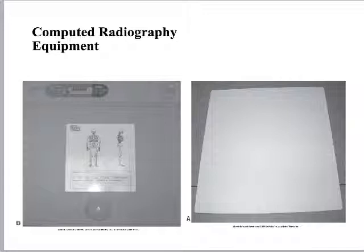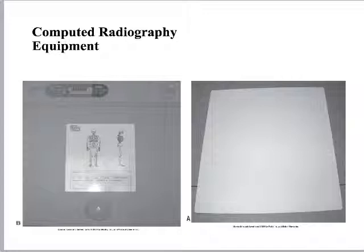Computed radiography actually works a lot like film, which was significant — a lot of technologists, myself included, made the mistake of thinking about CR exactly like film. They're really very different even though the workflow is similar. The first similarity between CR and film is that they both have a cassette. Inside a film-screen cassette you have intensifying screens and a piece of film kept in the dark. With CR, it has a photostimulable phosphor plate made out of barium halide or fluorohalide.